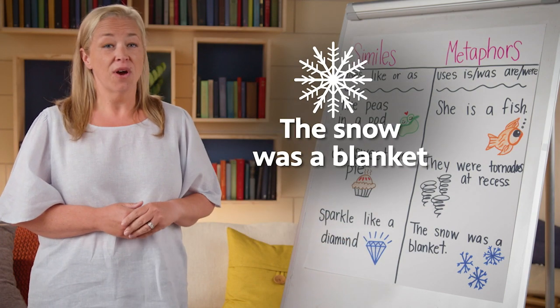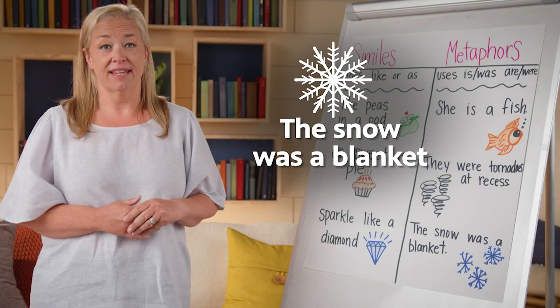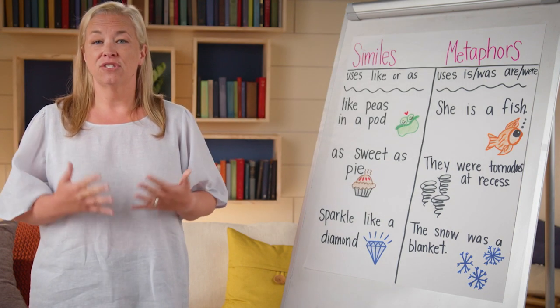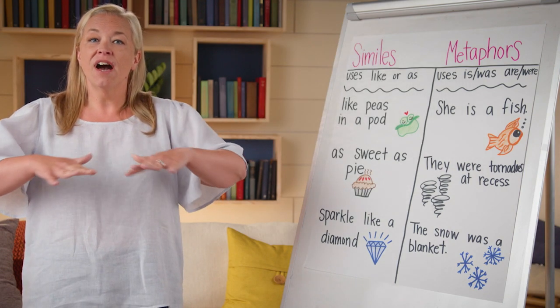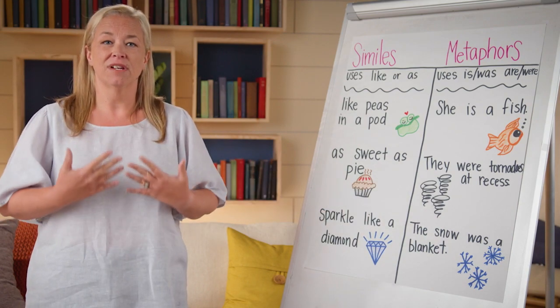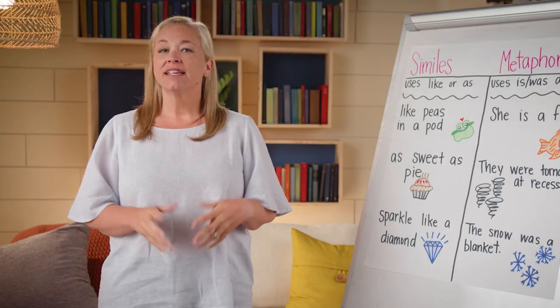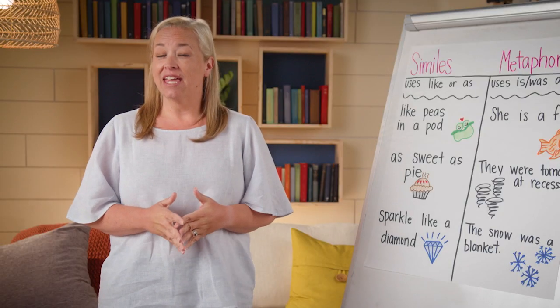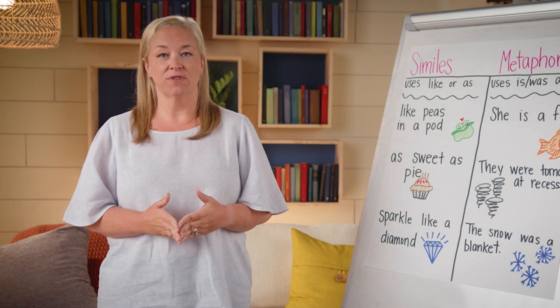'The snow was a blanket' — that means that snow is covering the ground, kind of like a blanket would cover you. We had snow here in Arkansas a few months back; the snow was everywhere, just blanketing everything you saw. Can you think of any other similes or metaphors?